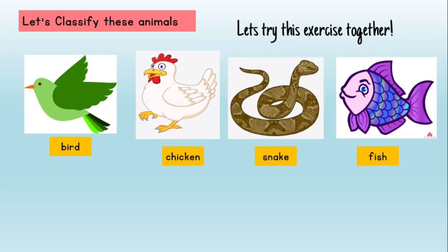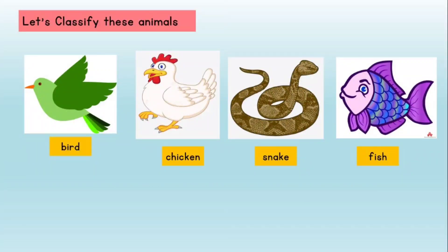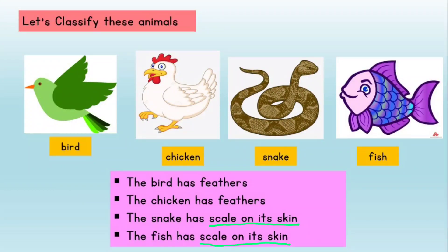Now, let's classify these animals. Firstly, we need to observe the characteristics of the animals. The bird has feathers; the chicken has feathers; the snake has scales on its skin; the fish has scales on its skin.